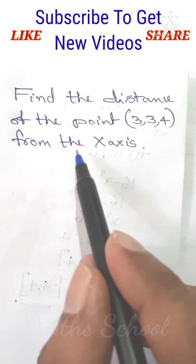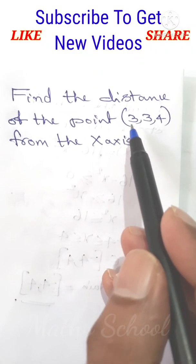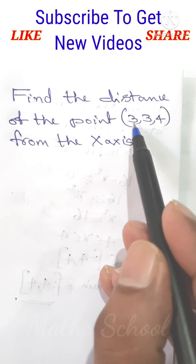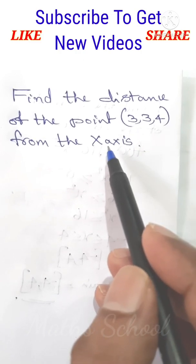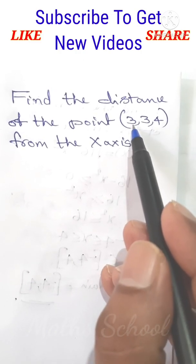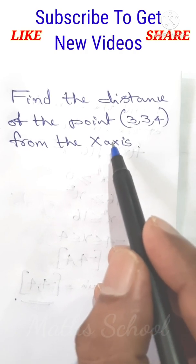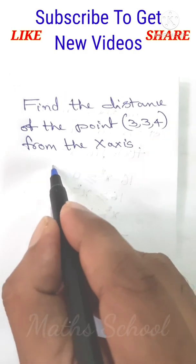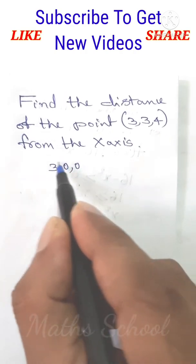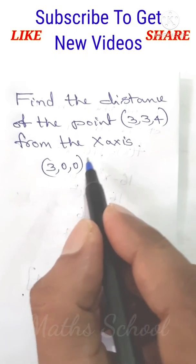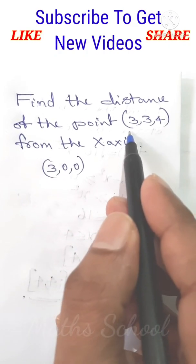Find the distance of the point from the x-axis. The required distance is the length of the perpendicular drawn from this point to the x-axis. If we draw a perpendicular from this point to the x-axis, it will meet the x-axis at the point. Remember the y and z coordinates of any point on the x-axis are zeros.